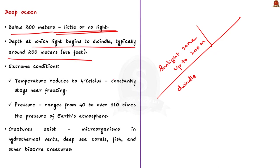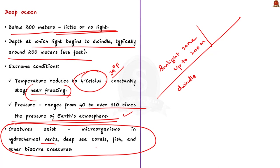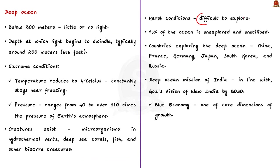In this region, temperature reduces to 4 degrees Celsius or 39 degrees Fahrenheit and constantly stays near freezing because there is no sunlight to heat the water. Pressures at these depths range from about 40 times to over 110 times the pressure of Earth's atmosphere. The deep ocean is dark, cold, food-poor, and subjected to intense pressure, typically deeper than 200 meters. Surprisingly, despite these extreme conditions, many creatures exist such as microorganisms in hydrothermal vents, deep sea corals, fishes, and many other bizarre creatures. Unfortunately, these harsh conditions make it difficult to explore the deep oceans, and because of this around 95% of the ocean is unexplored and unutilized.